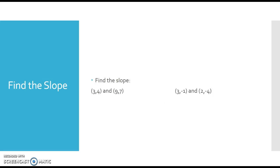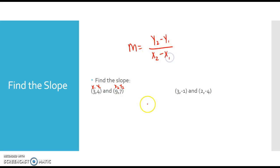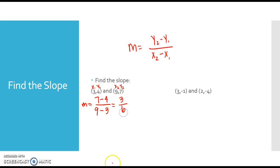I want to find the slope of these two pairs of points. For the first one, I've got (3, 4) and (9, 7). So (3, 4) is my (x1, y1) and (9, 7) is my (x2, y2). The slope formula is y2 minus y1 over x2 minus x1, so m equals 7 minus 4 over 9 minus 3. That gives me 3 over 6, which simplifies to 1 half. So the slope between these two points is 1 half.